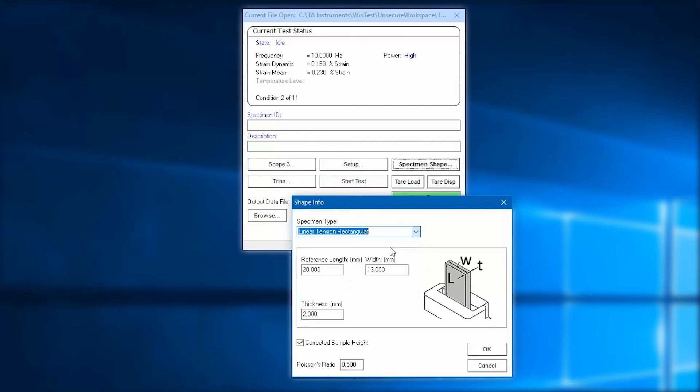For this test, I select linear tension rectangular. I type in the width and thickness that I measured previously.